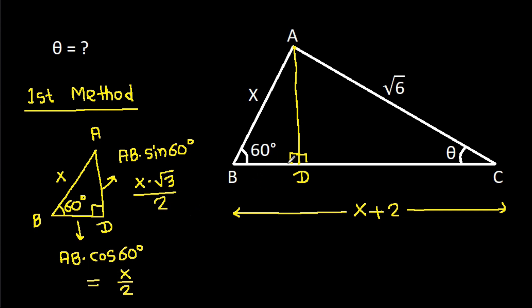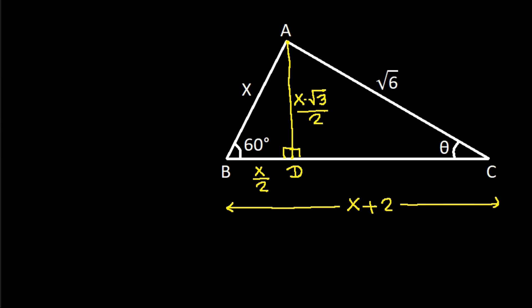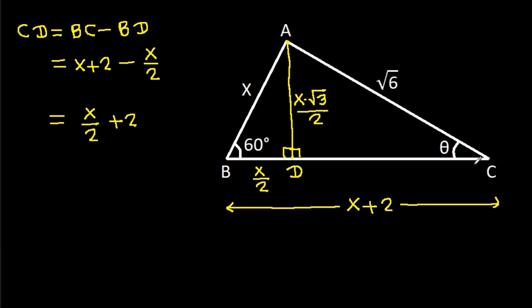So we get BD is x over 2 and AD is x times root 3 over 2. Now CD will be BC minus BD. BC is x plus 2 minus BD which is x over 2. So x minus x over 2 is x over 2, giving CD equal to x over 2 plus 2.